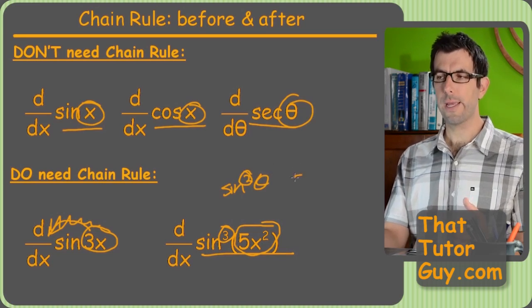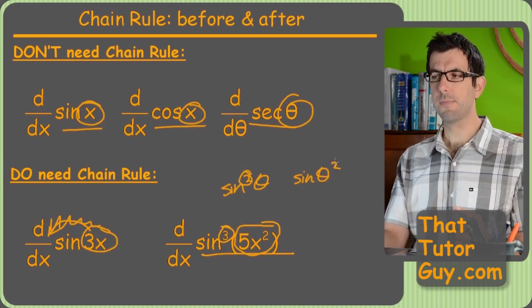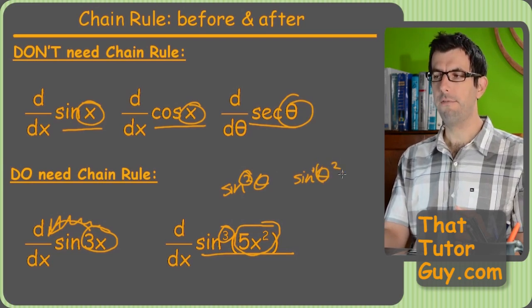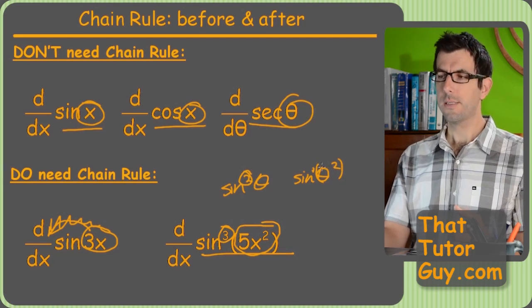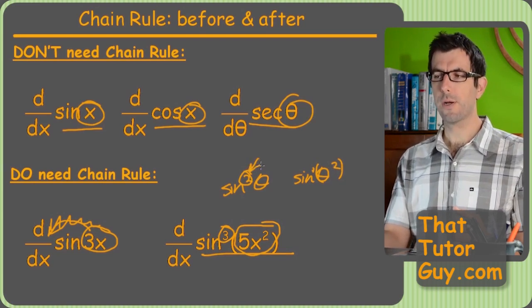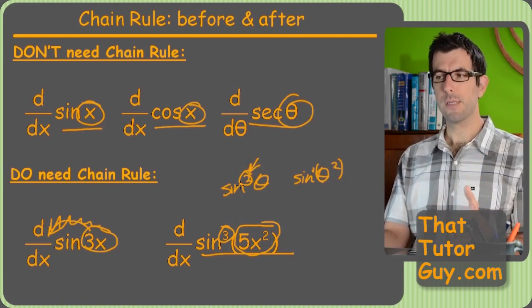This means the sine to the first power of theta squared. So that's why they put the exponent in this kind of weird gap between the sine and the variable.